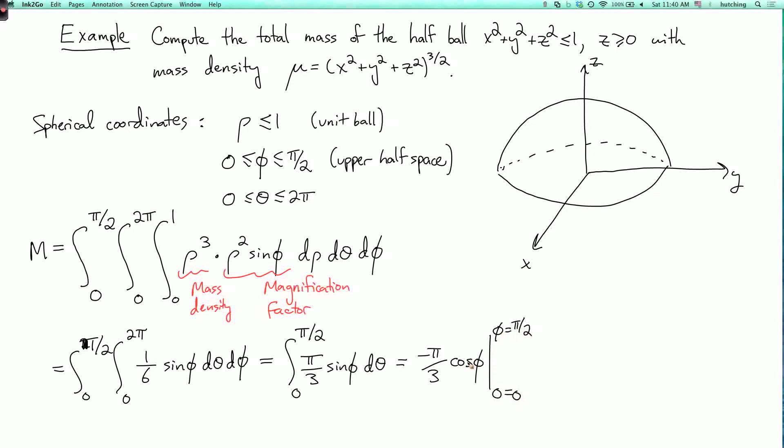So if phi equals pi over 2, cosine is 0. So I just get minus pi over 3 times minus cosine of 0, which is plus pi over 3.